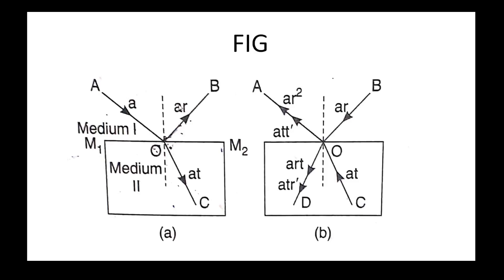The reflected wave travels along OB and the transmitted wave travels along OC — the directions change after interaction at O. The incident wave has amplitude A; the reflected wave has amplitude AR and the transmitted wave has amplitude AT. R and T are the reflection and transmission coefficients respectively.